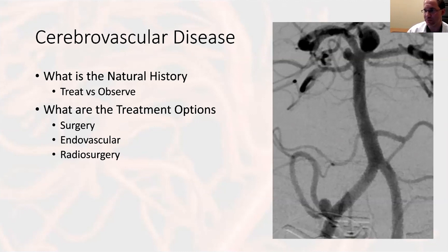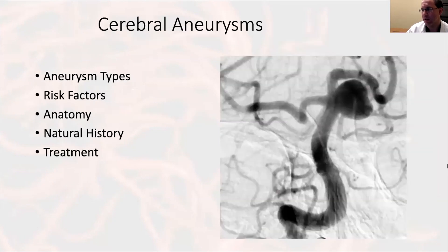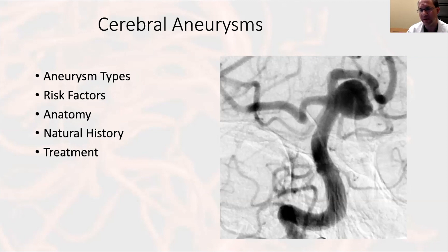To stratify the discussion today, we're going to talk about the different types of aneurysms, really focusing on saccular aneurysms. We'll talk briefly about risk factors for their formation, spend a decent amount of time on anatomy, and then cover the key factors: natural history and treatment options.